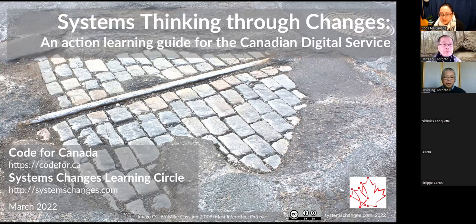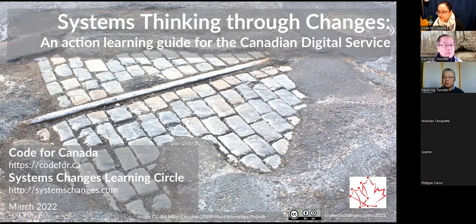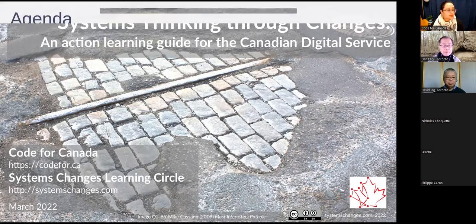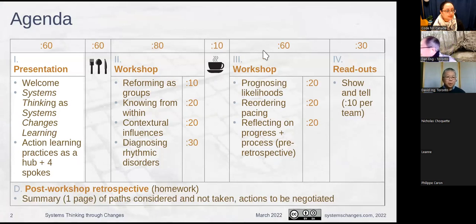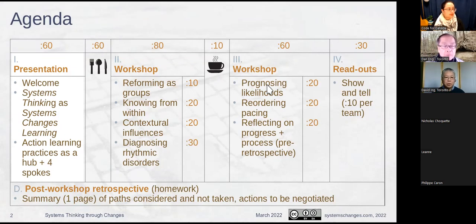Thanks, Ruth. If you haven't seen from the background, there is a slide deck and there are also links to three Google Sheets and Google presentations that accompany this workshop. You'll get them along the way and will probably want to refer to them later on. So this is the Action Learning Guide we have in front of you. Here's the agenda for today: we're going to spend this first hour doing a presentation. We're in the Welcome. We'll talk about Systems Thinking as Systems Changes Learning. We have the System Changes Learning Circle in Toronto that is the originator of this branch of systems thinking. And we'll step you through the methods, which are action learning processes presented as a hub and four spokes.